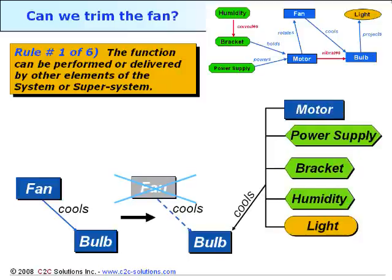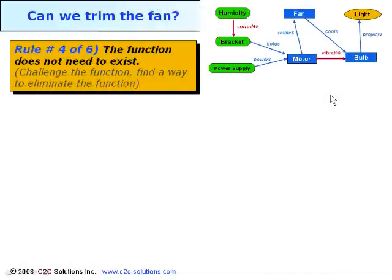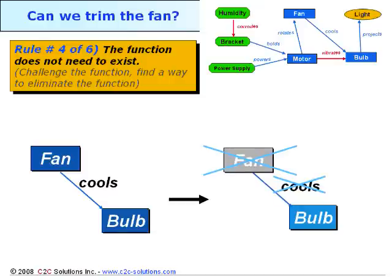Any ideas? Can you think of a way to get the motor, power supply, bracket, humidity, or even the light to cool the bulb? At least two practical ways exist. Rule number four of six has the problem solver figure out how to get by without the function. Again, the fan cools the bulb. If we don't have to cool the bulb, we don't need the fan. Can you come up with a concept where you don't have to cool the bulb? At least two practical ways exist.